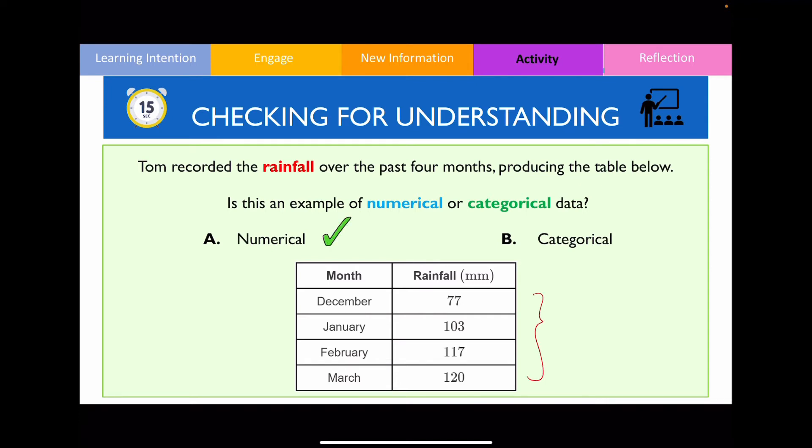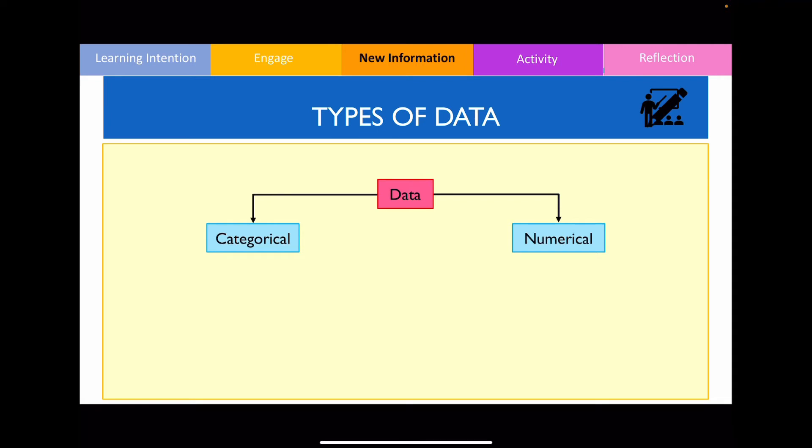The next thing that I want to talk about is the subtypes of each of these main types of data. So for categorical data, this could be further classified as ordinal or nominal data, whereas for numerical data, we could further classify that as discrete or continuous data. Let's unpack what these two types of categorical data are.